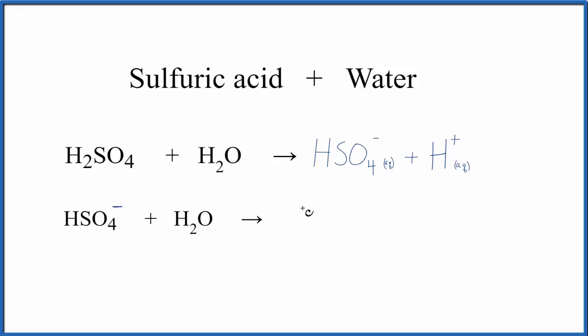So we end up with SO4^2-, which is now 2-, because it lost both the hydrogen ions, plus H+. And we should write aqueous after each one, since they are dissolved in water.